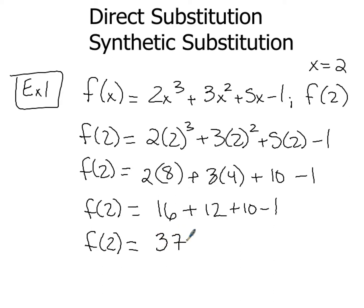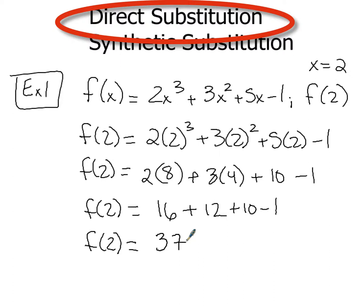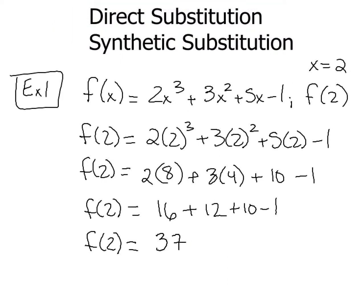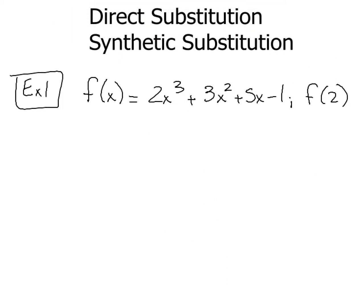Now this is exactly how your work should look if you're showing work for your teacher using direct substitution. Now synthetic substitution is going to look a little bit different. With this, what you're going to do, this f(2) right here, you're going to put this on the outside and you're going to make this upside down division symbol. Now what you're going to do next is you're going to take every single one of the coefficients that you have from the 2x³ all the way down to your constant of -1.